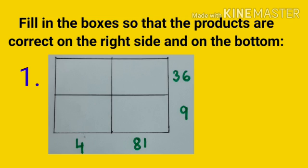Question number 1. See, we are having 4 boxes and on the right side we are having the product 36 and 9 and on the bottom we are having 81 and 4. First let's see 36.